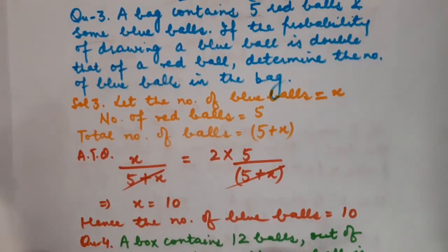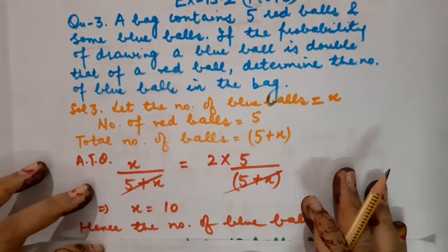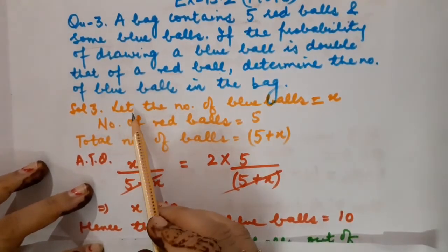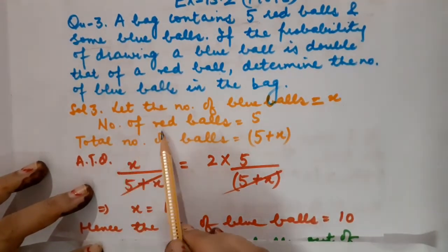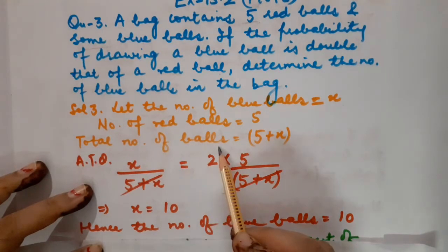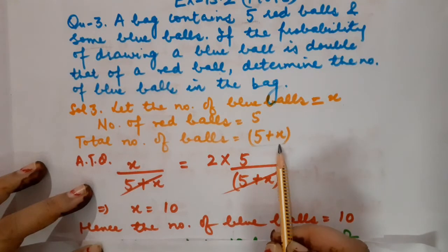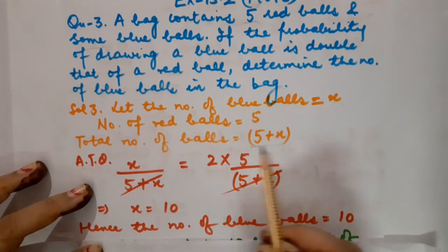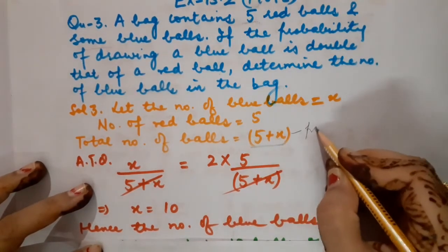How to do it, children? First of all, we will have to calculate the number of blue bowls. So let the number of blue bowls be equal to x. The number of red bowls is 5. So the total number of bowls is equal to 5 plus x. This 5 plus x will become our total number of possible outcomes.